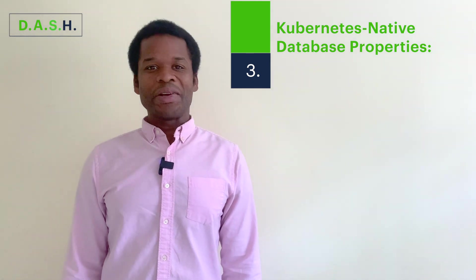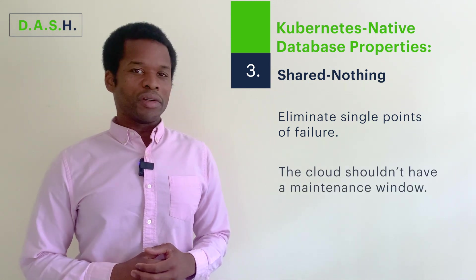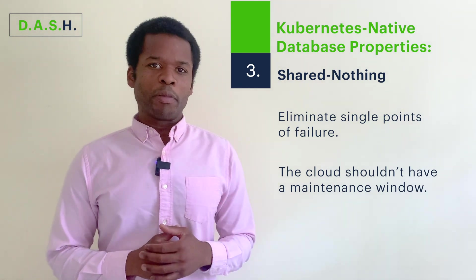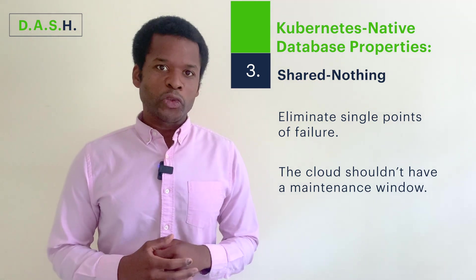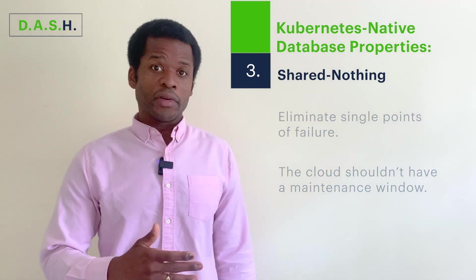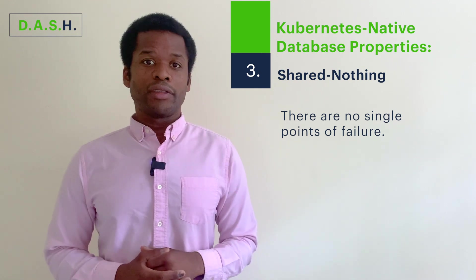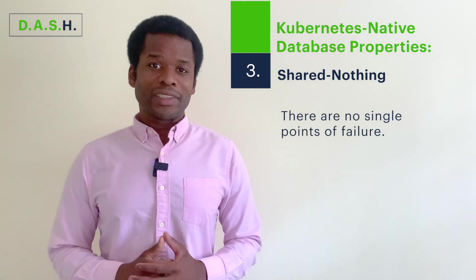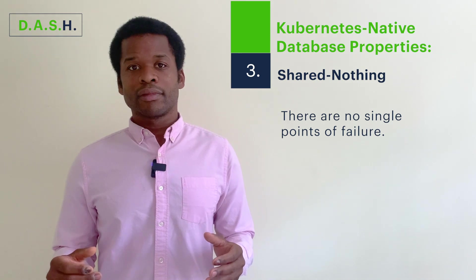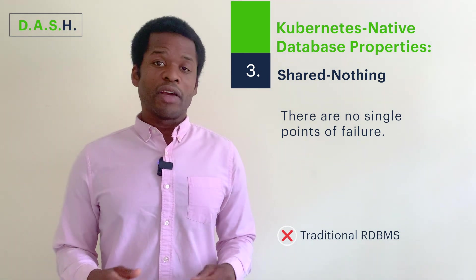Let's look at the third property: shared nothing. We must eliminate single points of failure. This is important because the cloud shouldn't have a maintenance window — true cloud-native services should have the capability to be always on. Building on the disposability property, where we said that we're resilient in the face of disruptions, shared nothing databases take us a step further in saying that we shouldn't have a single point of failure or any kind of centralized coordinator. In fact, Kubernetes itself is not a shared nothing system, with its single point of failure control plane that resides in one region. Also failing this property are traditional relational databases, which are notorious for having single points of failure.